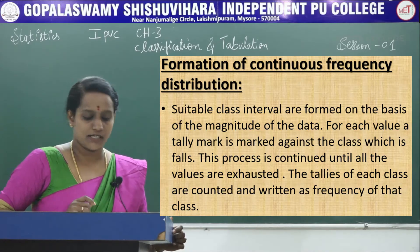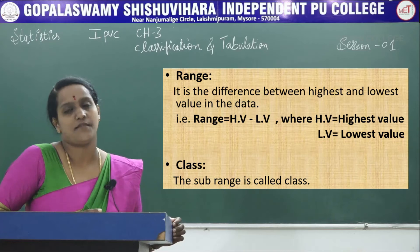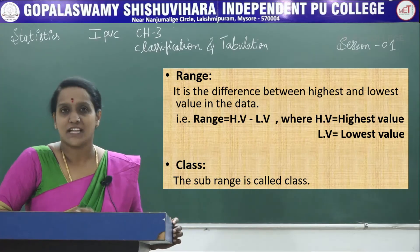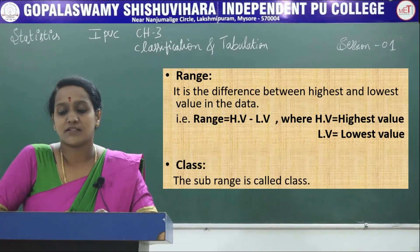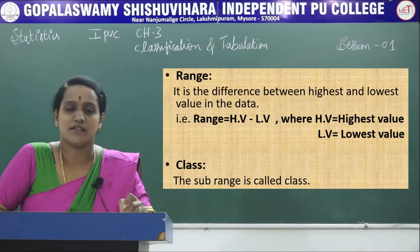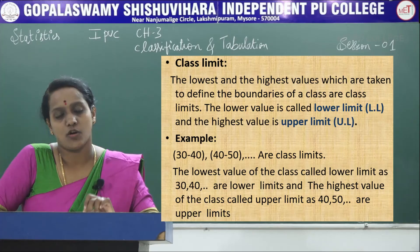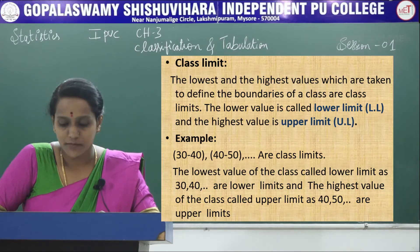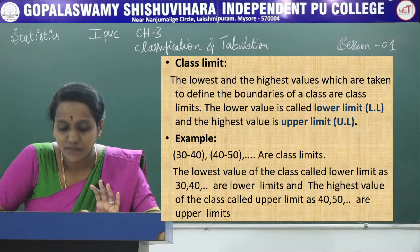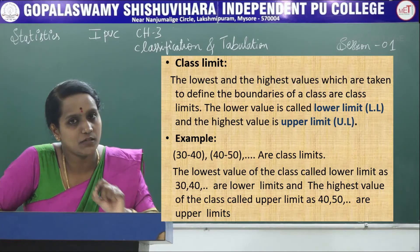Before solving problems, let us see some definitions. Range is the difference between the highest and lowest value in the data — this is very important when constructing a continuous frequency distribution. Class: the sub-range is called a class — first we find the highest and lowest numbers, then divide into sub-ranges. Class limit: the lowest and highest values that define the boundaries of a class are called class limits; the lowest value is the lower limit and the highest is the upper limit.